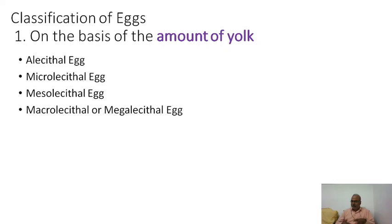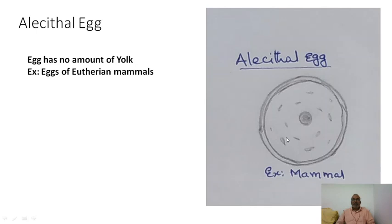On the basis of the amount of yolk, there are four types of eggs: alecithal egg, microlecithal egg, mesolecithal egg, and macrolecithal or megalecithal egg. Here, 'lecithal' means yolk. 'A' means absent, 'micro' means very small, 'meso' means moderate, and 'macro' or 'mega' means very large amounts.